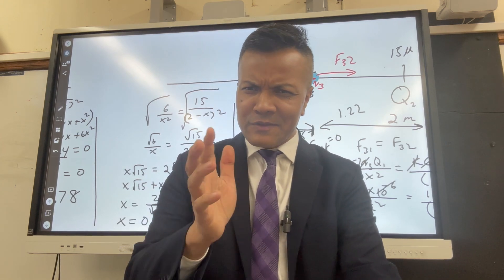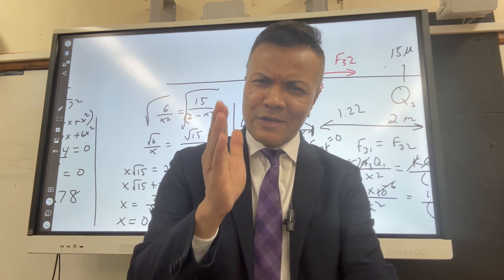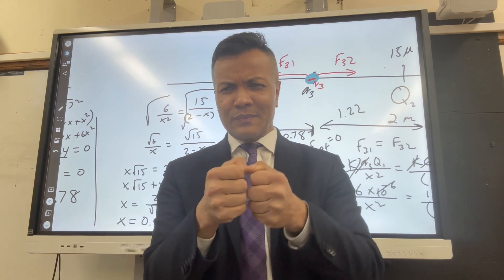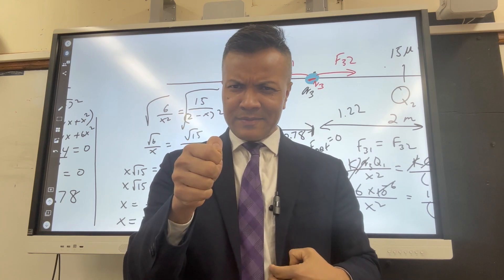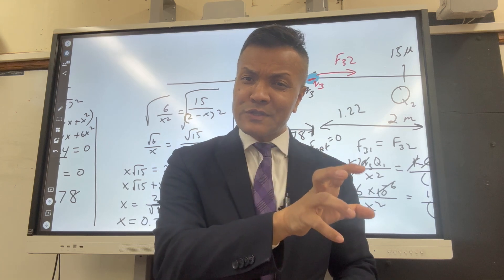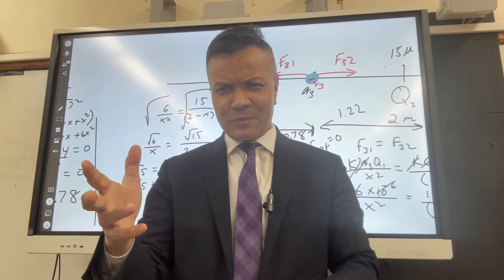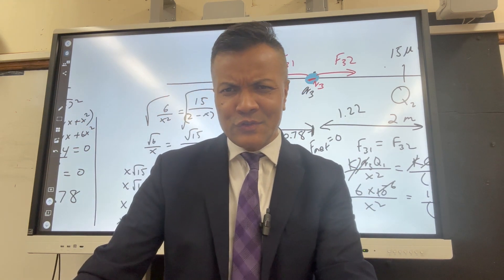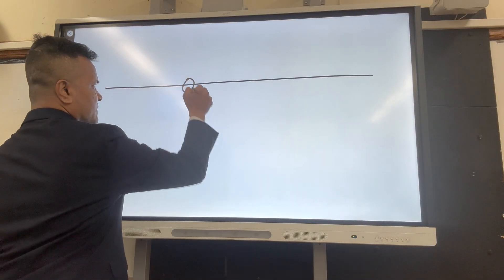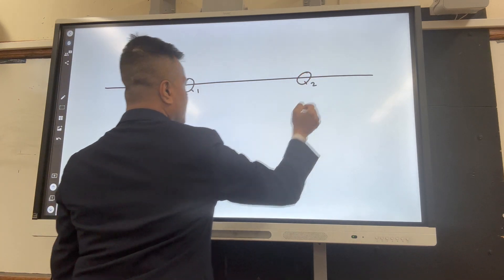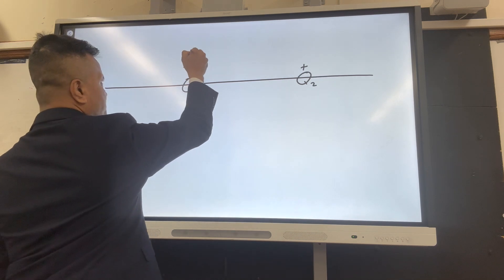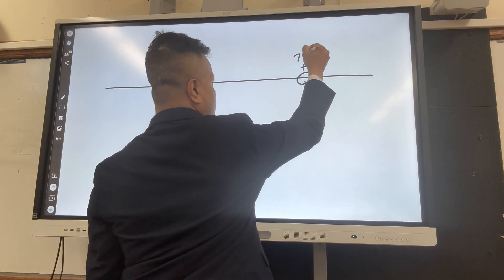Today, we're going to keep it simple. We're going to just try to understand the force on Q3, which is a static charge, due to Q1, which is positive, and Q2, which is also positive. So let's not just say it, let's do it. I want you to consider two charges — positive, positive — 5 microcoulomb and 7 microcoulomb.